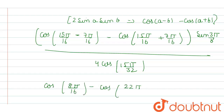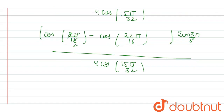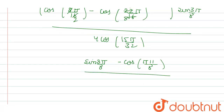Now in the numerator, the terms simplify. cos(π/2) is equal to 0, so that term cancels out. From here our term becomes sin(3π/8)·[−cos(11π/8)] divided by 4cos(15π/32).